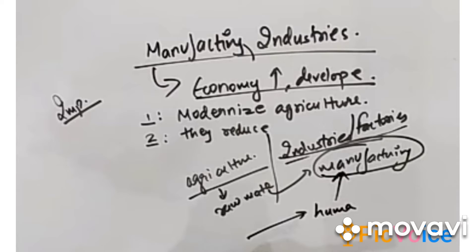The first point in the importance of manufacturing is that it helps in modernizing agriculture and reduces dependence on it. One century ago, the entire population depended on agriculture. But when industries were introduced, raw materials were manufactured in industries, and human resource was required for that. So people got jobs in those industries and factories, reducing over-dependence on agriculture, and the economy boosted.